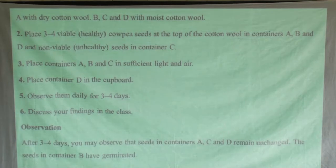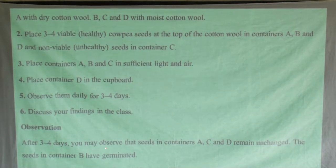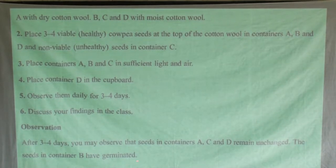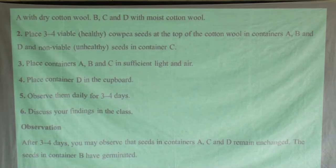Looking at the observations — what you shall find: after three to four days you may observe that seeds in containers A, C, and D remain unchanged, and seeds in container B have germinated. Container A has viable seeds but will remain unchanged, and C — which has non-viable seeds — will also remain unchanged, as will D.